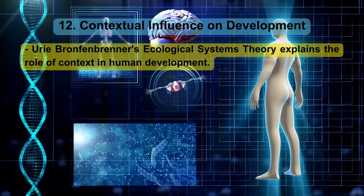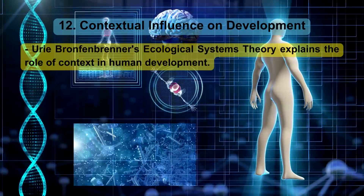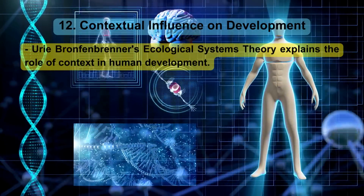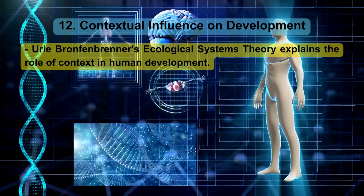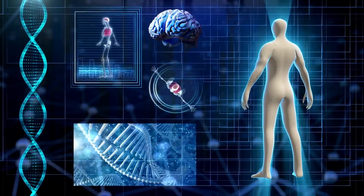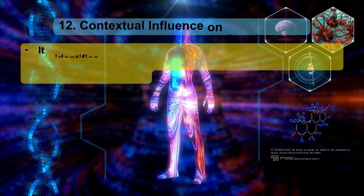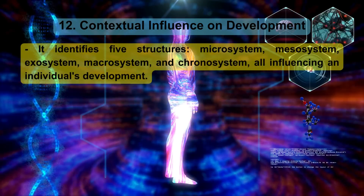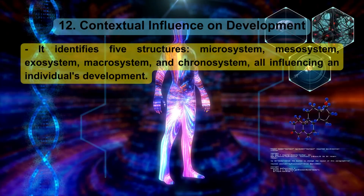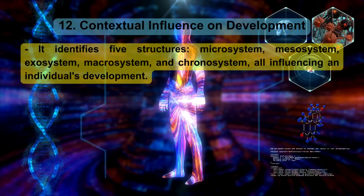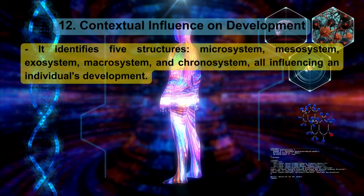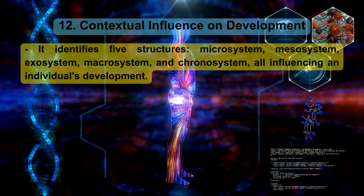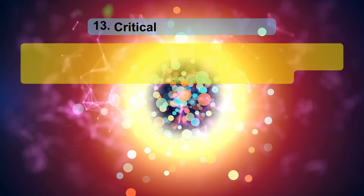Contextual influence on development: Urie Bronfenbrenner's ecological systems theory explains the role of context in human development. It identifies five structures — microsystem, mesosystem, exosystem, macrosystem, and chronosystem — all influencing an individual's development.